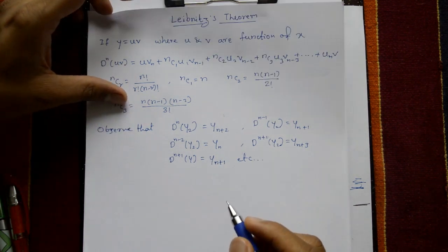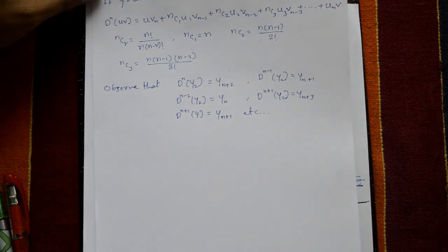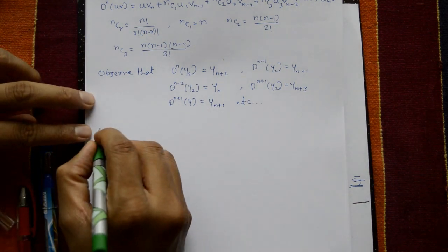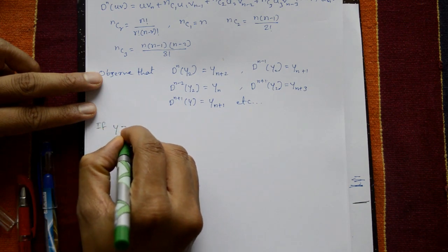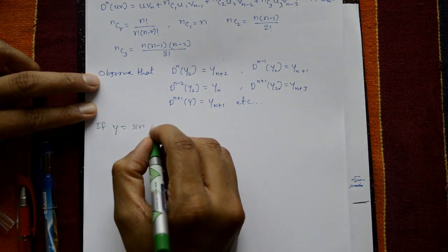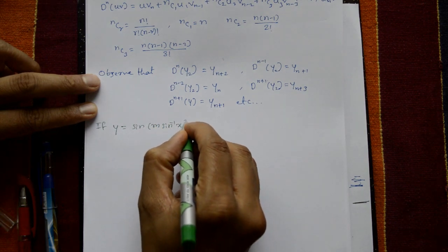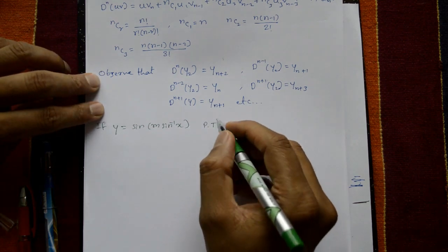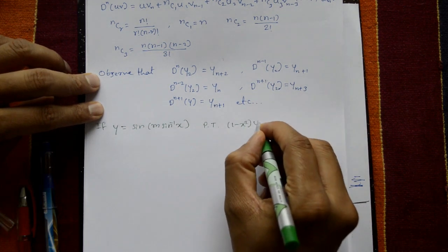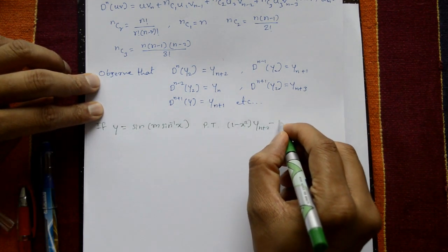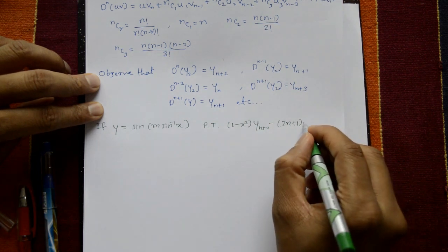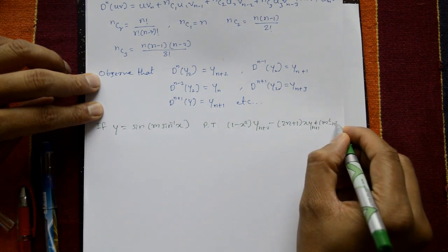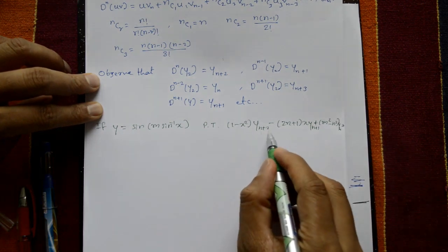Now the example problem: if y equals sin(m·sin⁻¹x), prove that (1 - x²)·y(n+2) minus (2n+1)·x·y(n+1) plus (m² - n²)·yn equals zero.